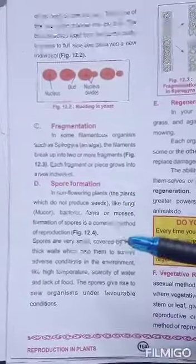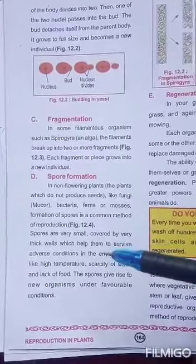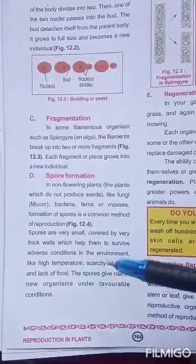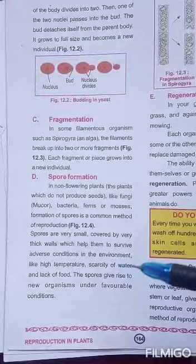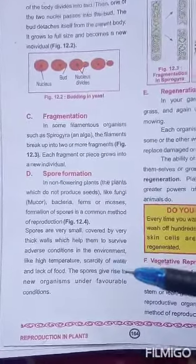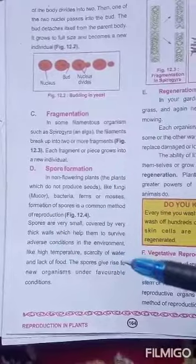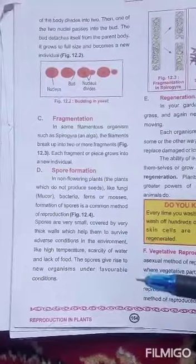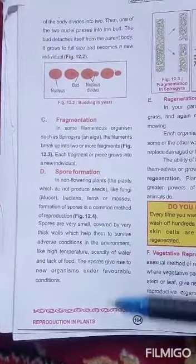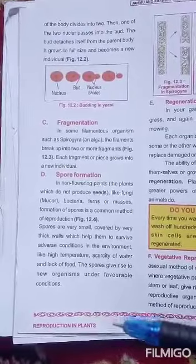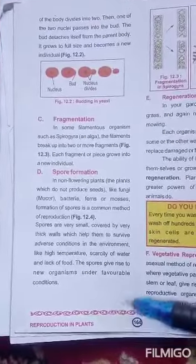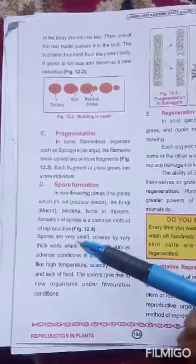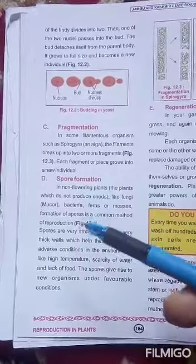Spore formation occurs in non-flowering plants like fungi, bacteria, ferns, and mosses — they form spores. Spores are very small and covered by a very thick wall, which helps them survive adverse conditions such as high temperature, scarcity of water, and lack of food. These spores are transferred to various places by wind or animals, and when they get favorable conditions they burst and new offspring are born.